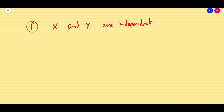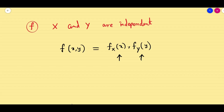They may also ask about independence. To check independence, we use the formula: f(x, y) should equal the product of their marginal functions fₓ(x) · f_Y(y). Multiply the two marginal functions and check whether the result equals the given joint function. If they are equal, X and Y are independent; if not, X and Y are not independent. Hope you understand how to crack continuous random variable problems. Thank you, see you in the next video.